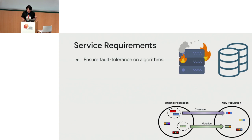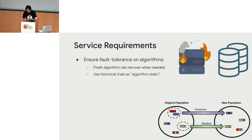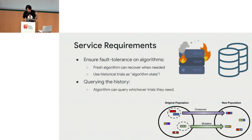The core solution we use is that we need to be able to recover the algorithm when needed, in case the server crashes or dies. Since we have the data store storing all the histories of the optimization loop, we can use these historical trials as the algorithm state. We can query the history and the algorithm can choose whatever historical data it needs to recover its state. This is very useful for algorithms which work in batches and populations — for example, if you're running a gigantic NAS run with regularized evolution, you can keep track of all previous trials and the population size.